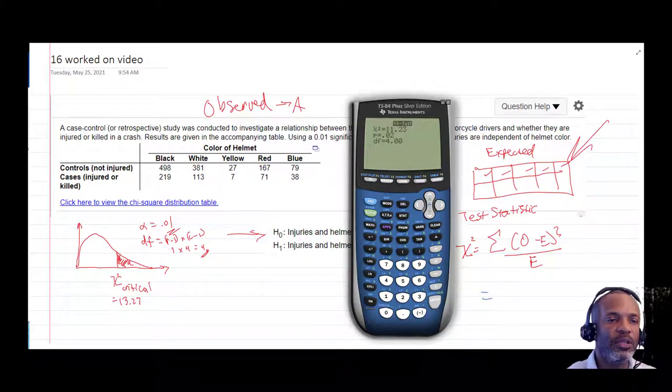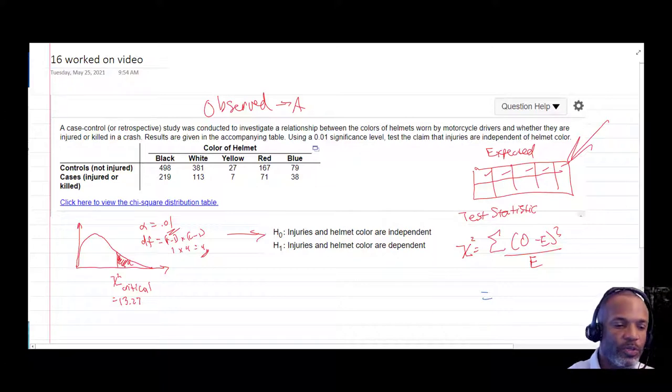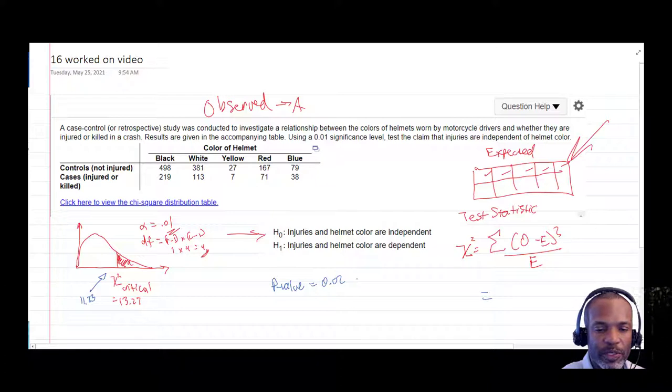I think we're good here. So let's do that. 11.23 is over here. And then also, our P-value is not low enough. Our P-value equals 0.02, which is greater than alpha. So both of those are telling us to not reject. We do not have enough evidence to reject the null hypothesis.